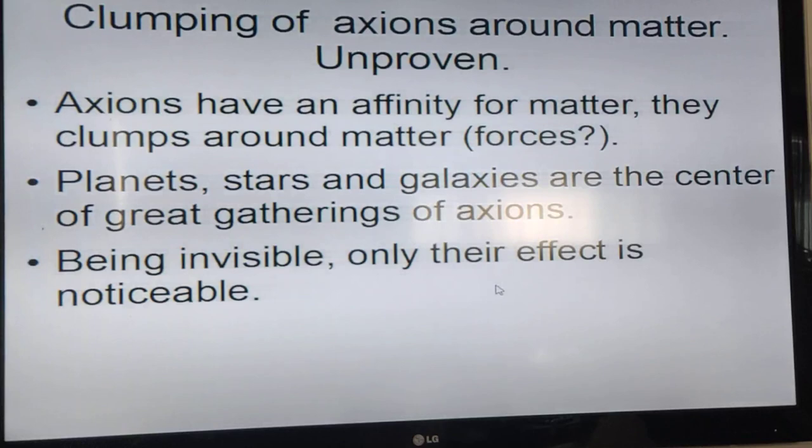Previously I explained that matter was formed by axions and energy coming together in the early universe. Because of that, axions have an affinity for matter and tend to clump around matter, so wherever there are large masses like planets, stars, and galaxies, these entities become the gathering place for these axions.